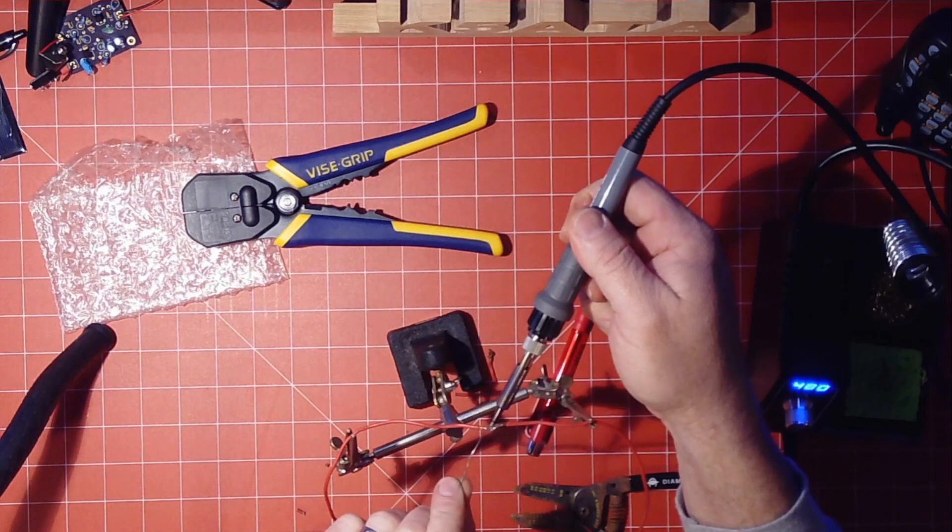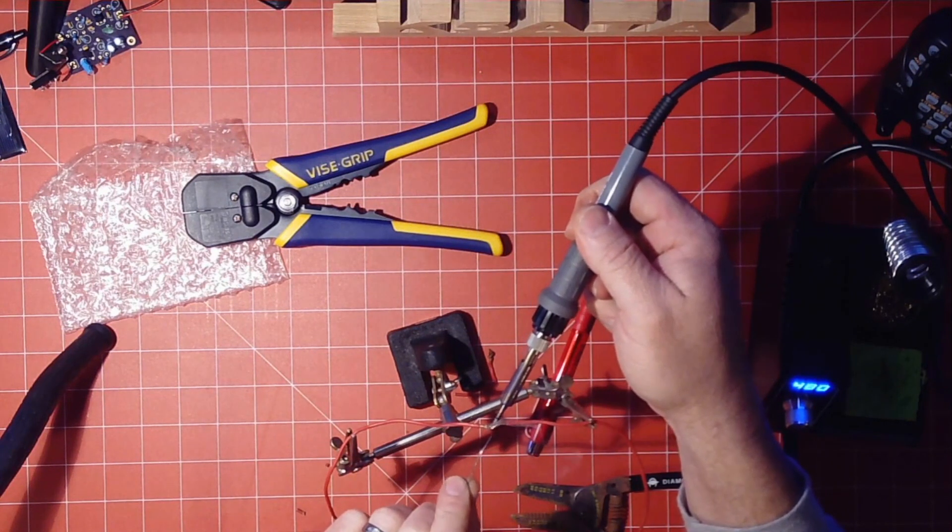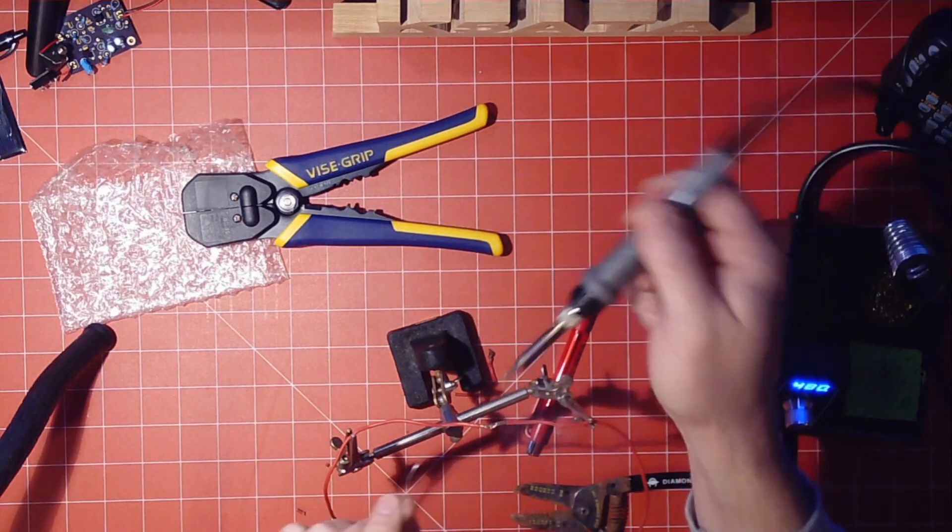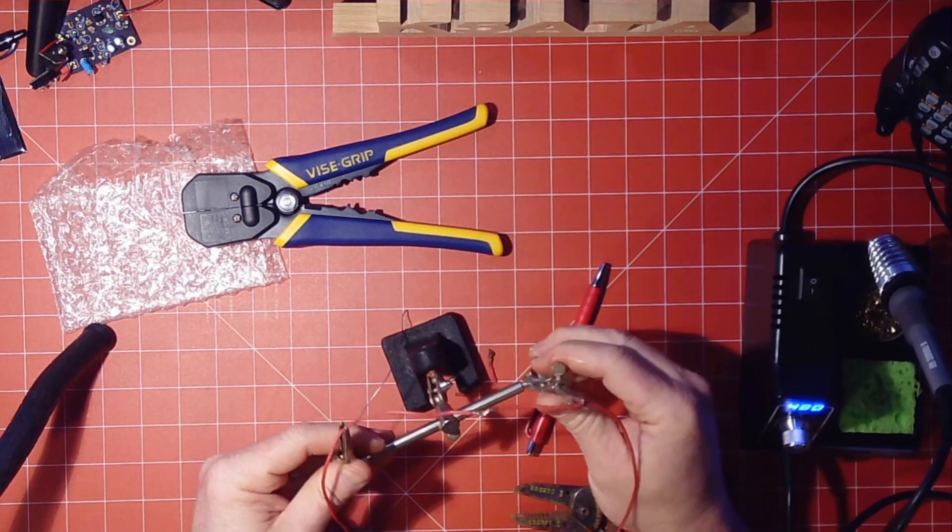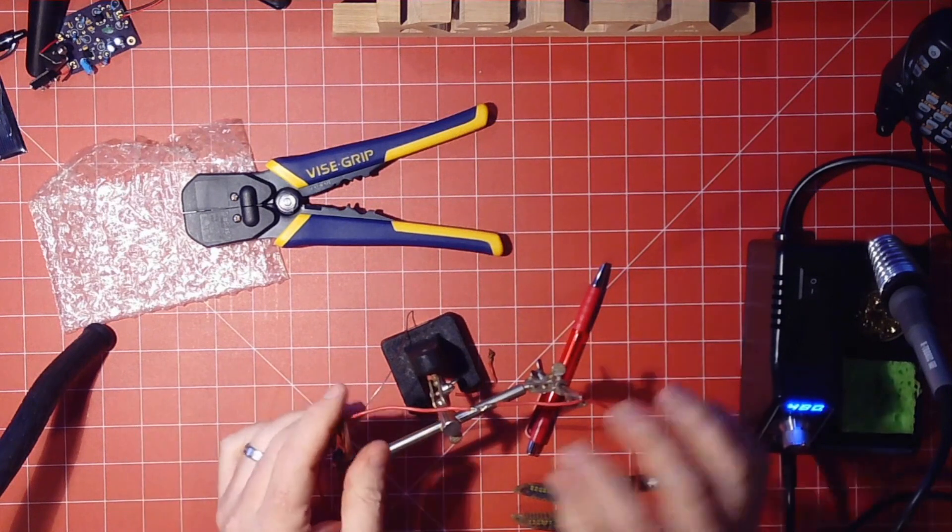You just heat it. Flow the solder in. There we go. And boom, you now have a wire soldered together.